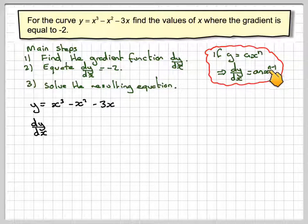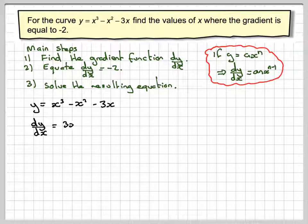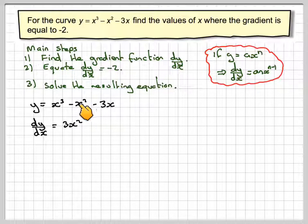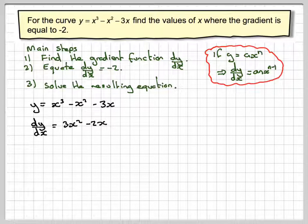So 3x cubed becomes 3x squared. x squared becomes minus 2x. And then differentiating minus 3x becomes minus 3.